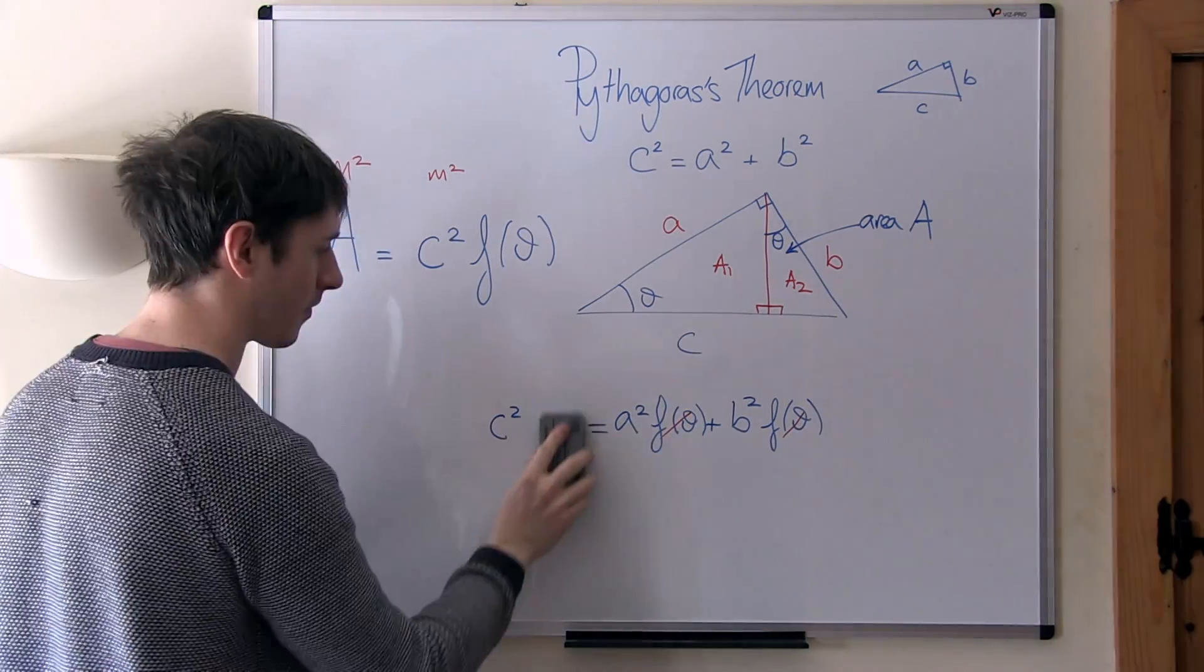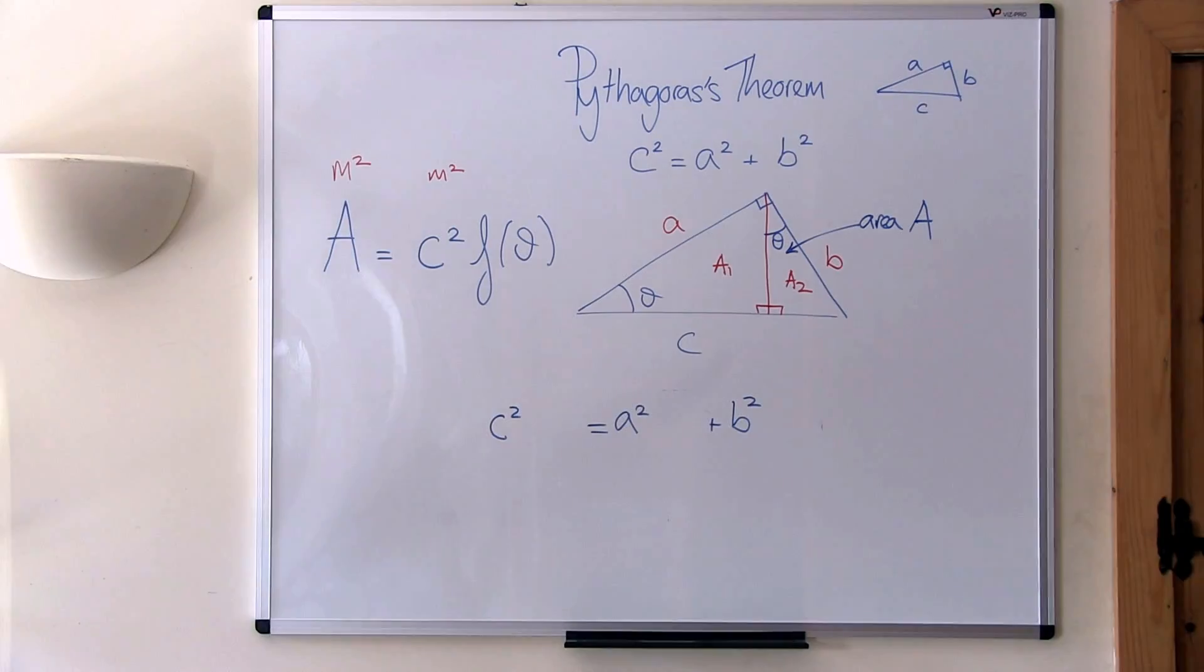Right. After dividing by the common factor of f of theta, we arrive at Pythagoras theorem.